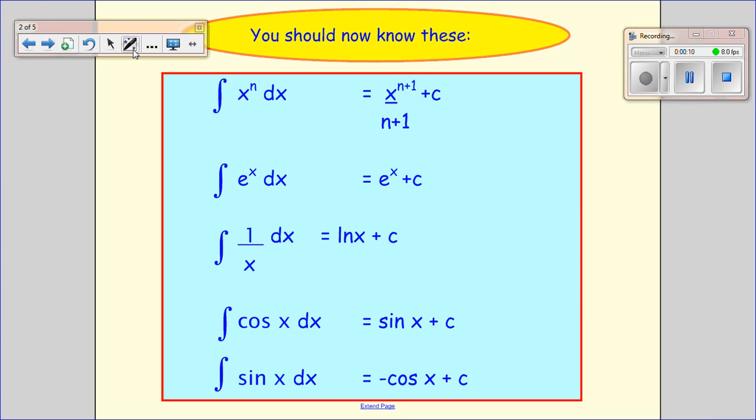So we should all be happy now with integrating the following things. So if we want to integrate x to the power of n, we add 1 to the power and divide by the adjusted power.